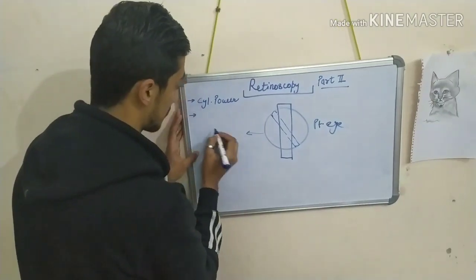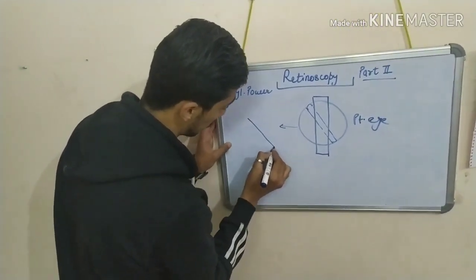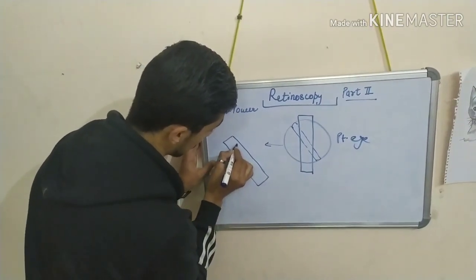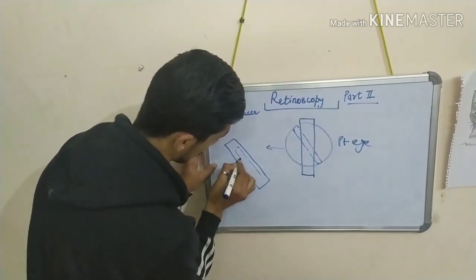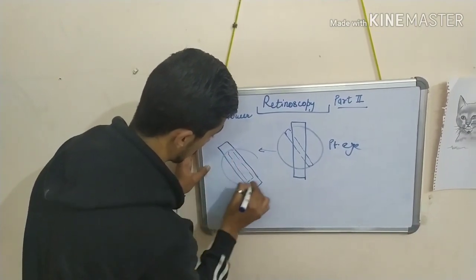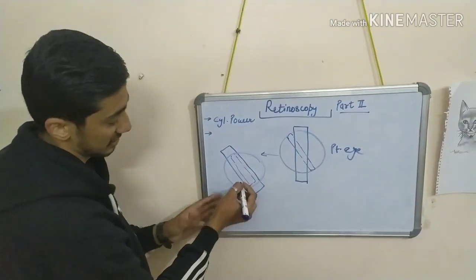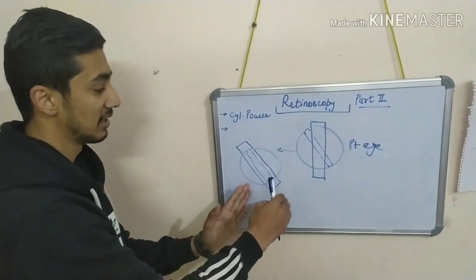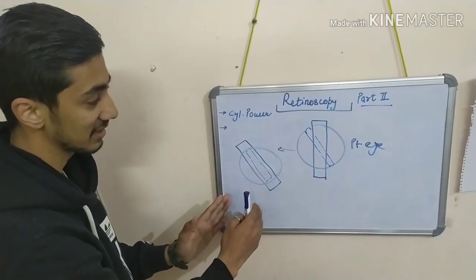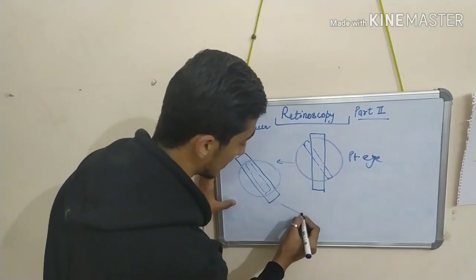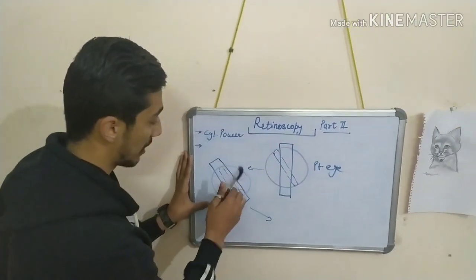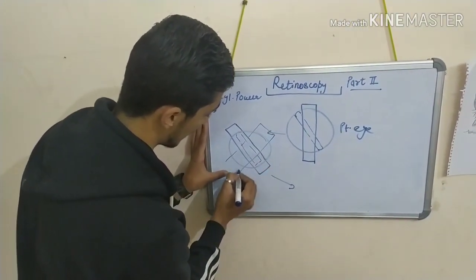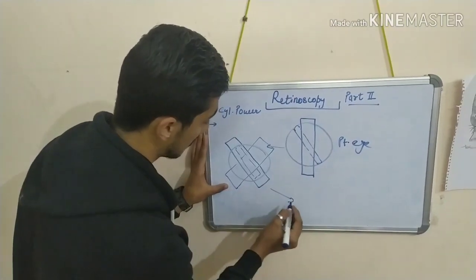Now, first you have to move the slit in the direction of the reflex — in the direction of the reflex. You have to simply neutralize this meridian first. When you neutralize this meridian, you have to move the slit 90 degrees apart. This is the slit; you have to move it in this direction — 90 degrees apart.